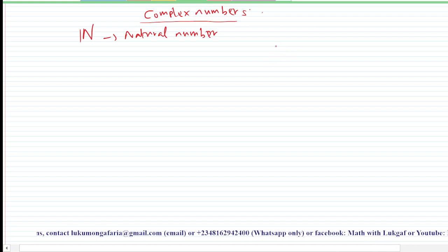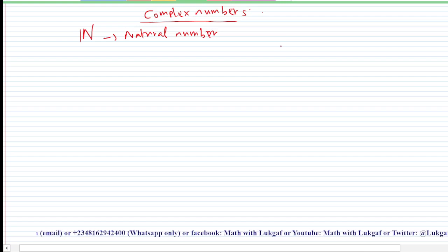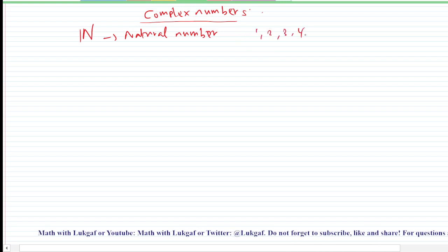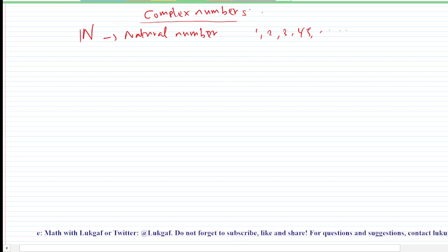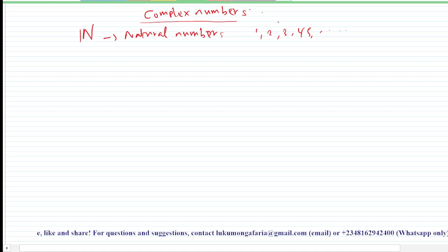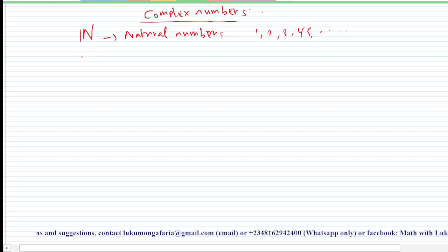Natural numbers are those numbers that we were introduced to when we were in primary school — numbers like one, two, three, four, five, and so on. They are called natural numbers, that is, the set of counting numbers. Likewise, we have integers.